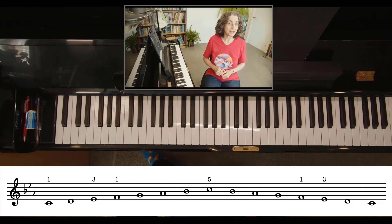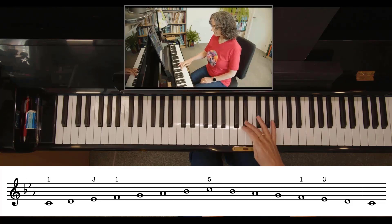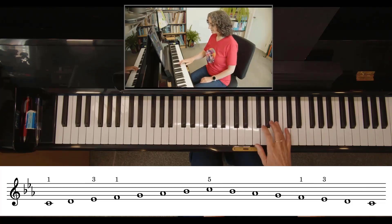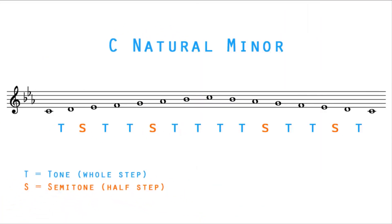Here's C natural minor. For those of you who like to drill down into the real nitty-gritty, here's the ordering of tones (whole steps) and semitones (half steps) in the natural minor. This ordering of tones and semitones will be exactly the same for every natural minor in every key.